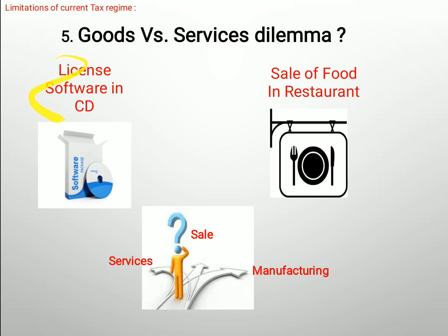When you sell a software license, is that a service or a sale? Is it manufacturing? A normal person's mind wonders — I built software, is that manufacturing or a service or a sale? Same confusion exists with restaurant food. These things were very problematic before but because of GST they are now simplified. Whatever you do — provide a service or sell goods — GST applies. One simple tax.